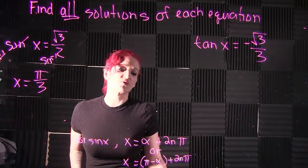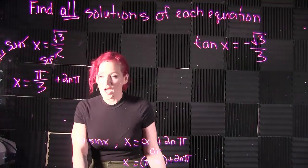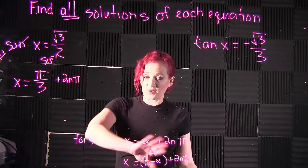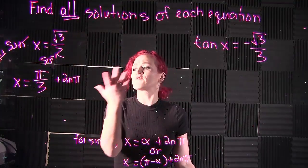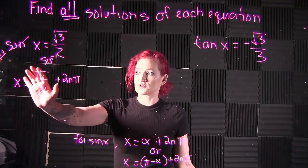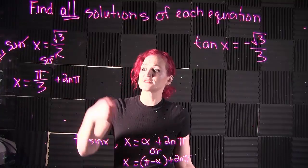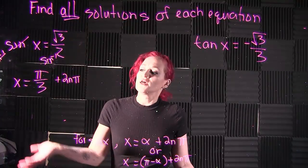x equals π over 3 plus 2nπ. We know our first solution is π over 3, and we're going to continue to make a rotation around the unit circle. For every rotation, you add 2nπ to this value. So π over 3, for our next solution, add 2nπ to that one, and keep adding that for your next solutions.